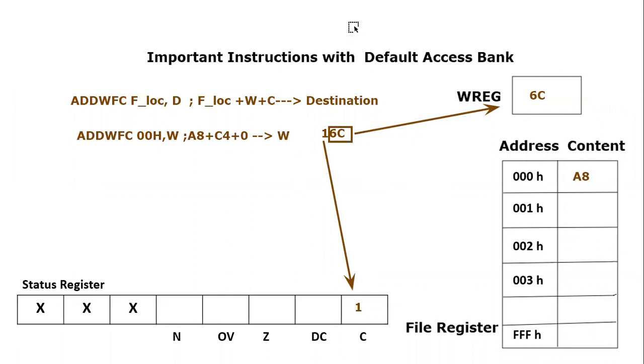Now let's perform the same instruction again because now we have a different value of carry flag. Last time it was zero, but right now it is one. So we will perform Add Working with File Carry again, 00 hex location we will use. This time we want to save the result in file register.